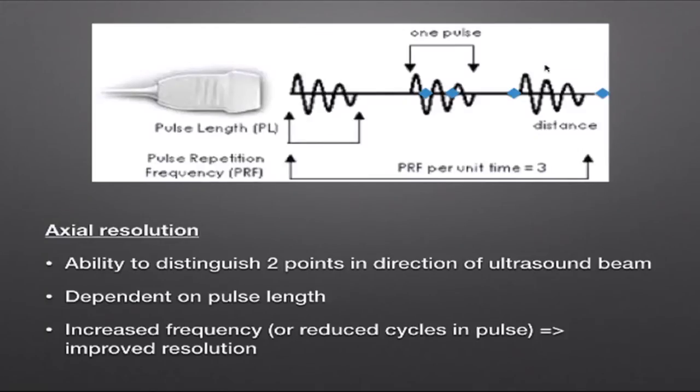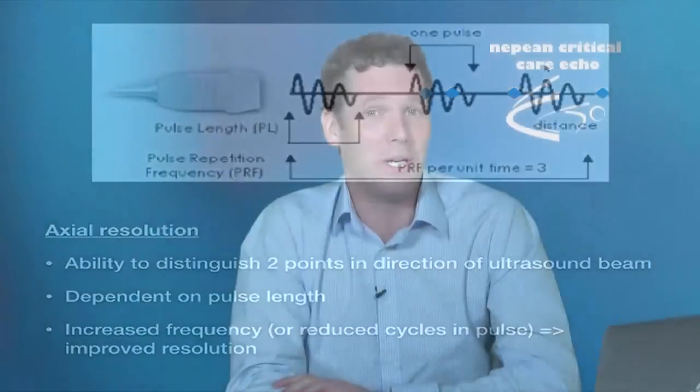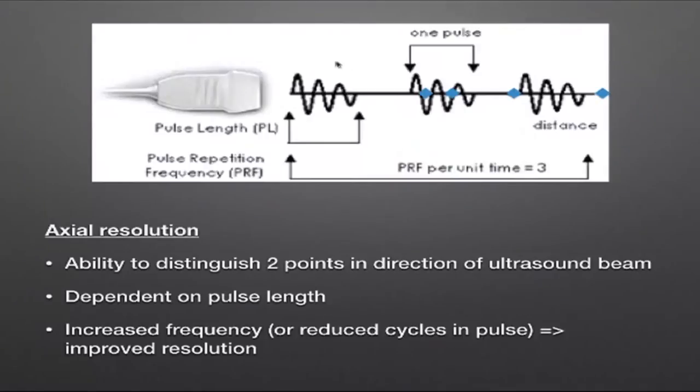Those first two points — closer than the pulse length — cannot be distinguished on the ultrasound image, whereas the second pair can, because they are separated by a greater distance than the pulse length itself. To improve axial resolution, we can either increase the frequency — which reduces wavelength and therefore pulse length — or reduce the number of cycles in the pulse. Both approaches make the overall pulse length smaller, improving the ability to differentiate structures.